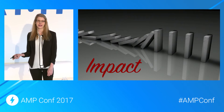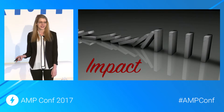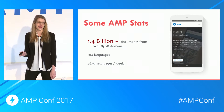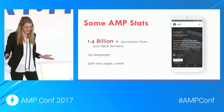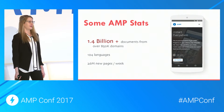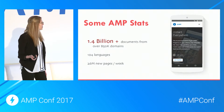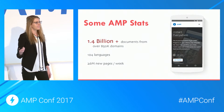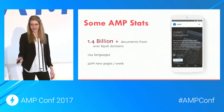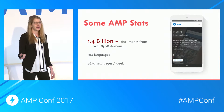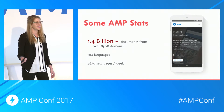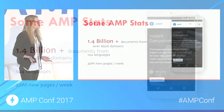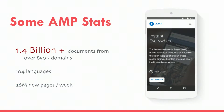Also, you want to have impact. We have over 1.4 billion AMP documents out there in over 100 languages, and we see about 26 million pages every week. You can be a part of that.